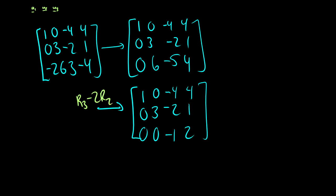We can do some adjustments — we're going to multiply row three by negative one.